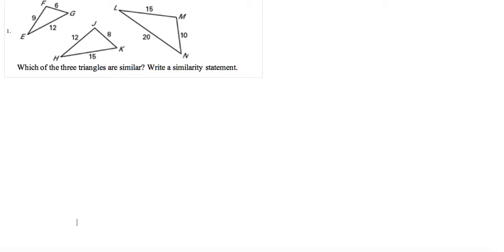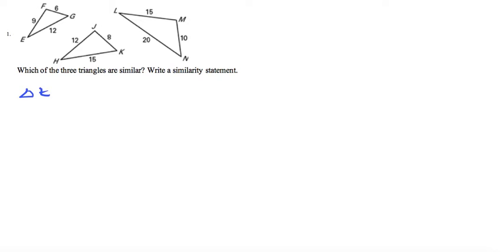So we have three triangles and all we really know here are their side lengths. What I'm going to do is list out their lengths from smallest to largest. Triangle EFG: if we list them from smallest to largest, that would be FG = 6, then FE = 9, and then EG = 12. So that's this triangle here on the far left.